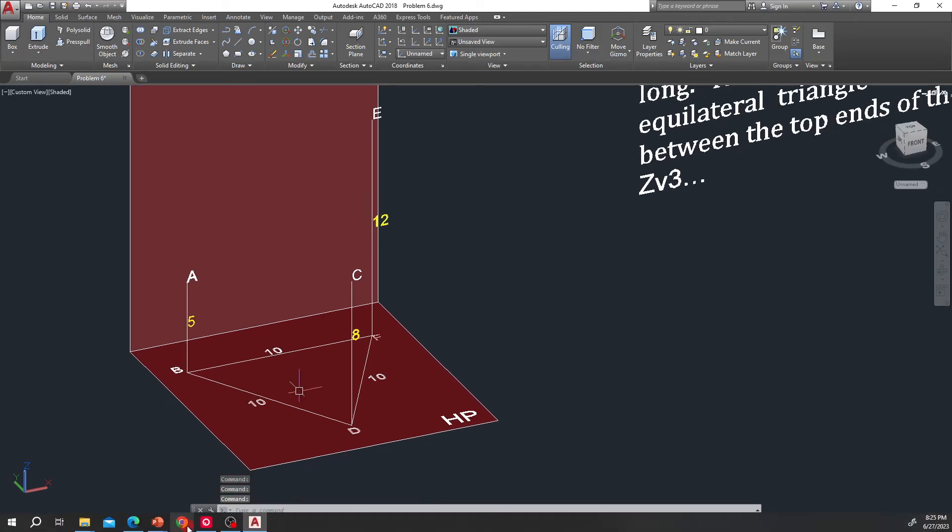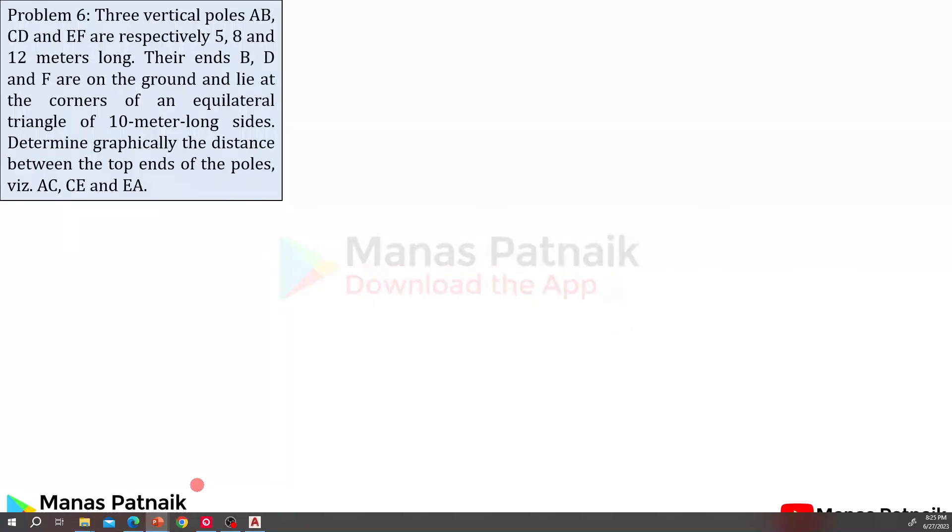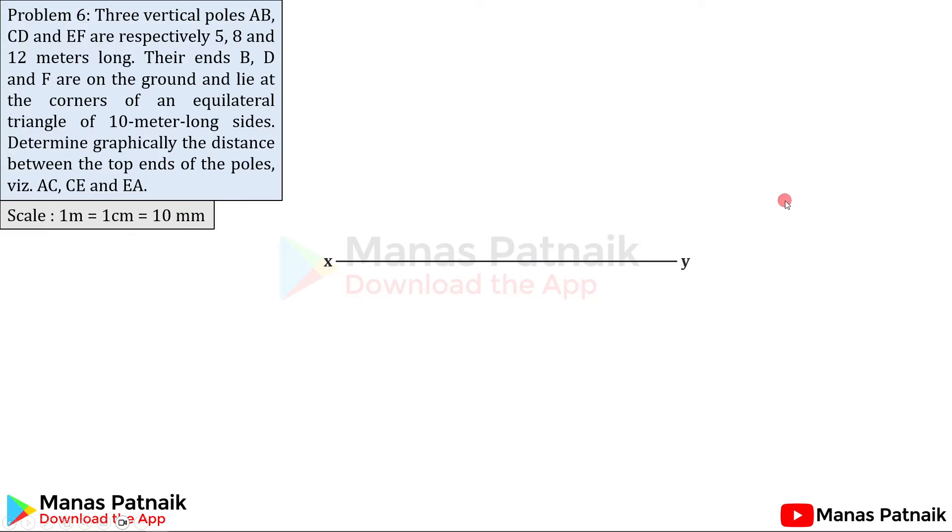Here we go. First of all, you need to take a scale: scale 1 meter is 1 centimeter or 10 millimeter. Make an XY line. You can start here by creating the top view. We know very well that from the top what we'll see is an equilateral triangle: ab, cd, and ef, 10 meter, 10 meter, 10 meter.